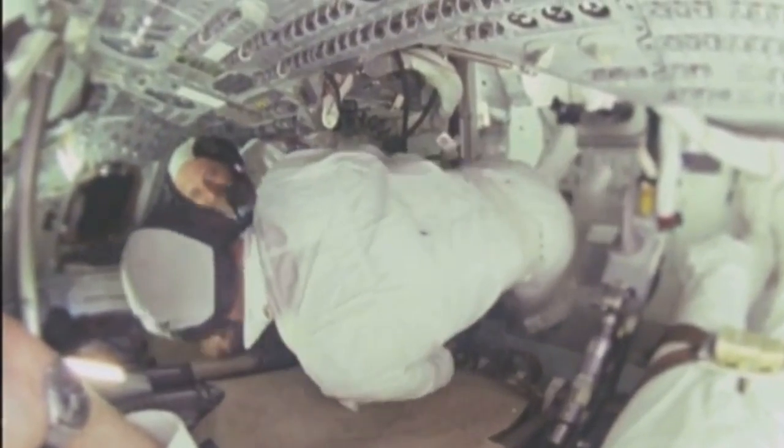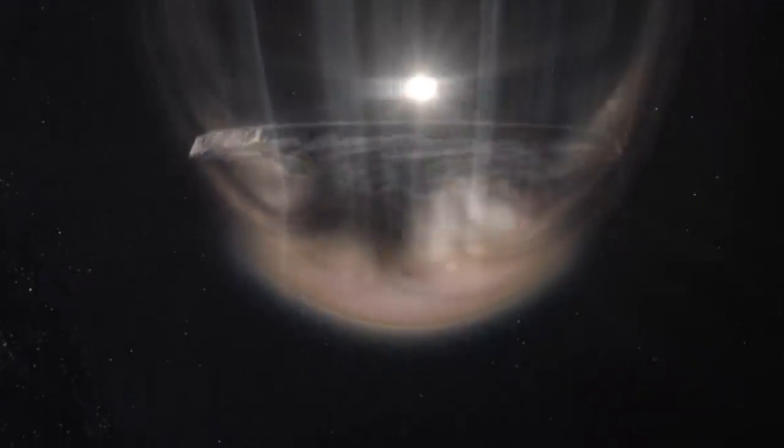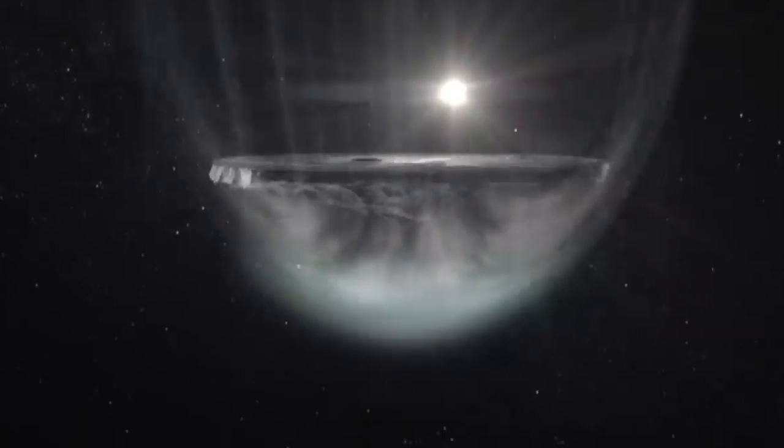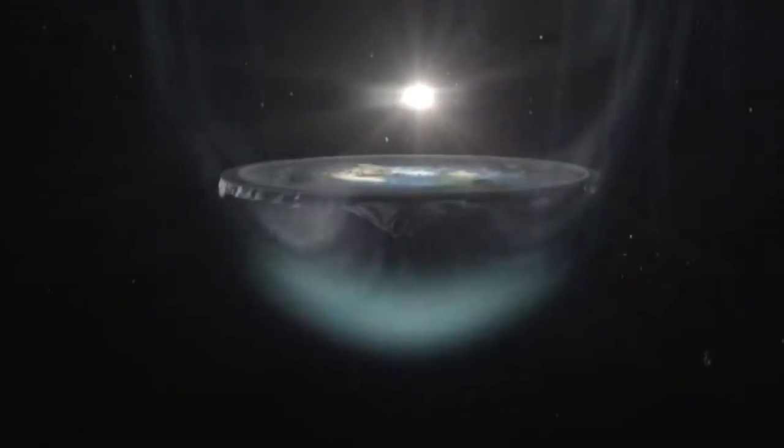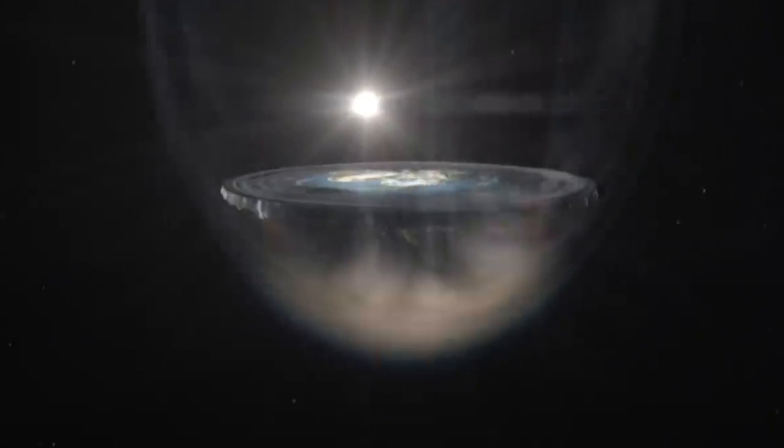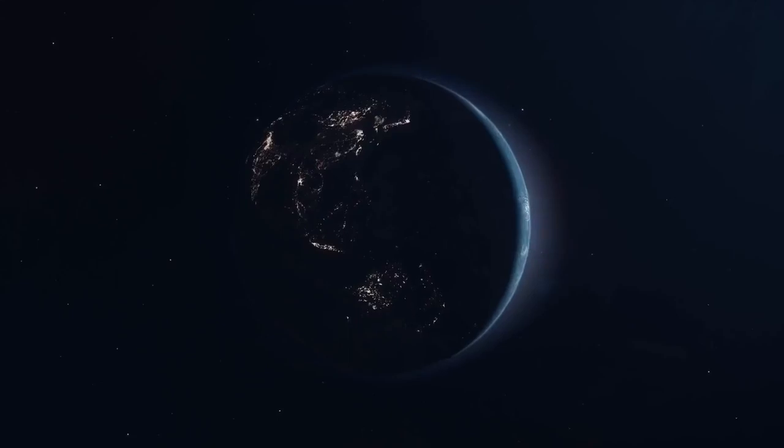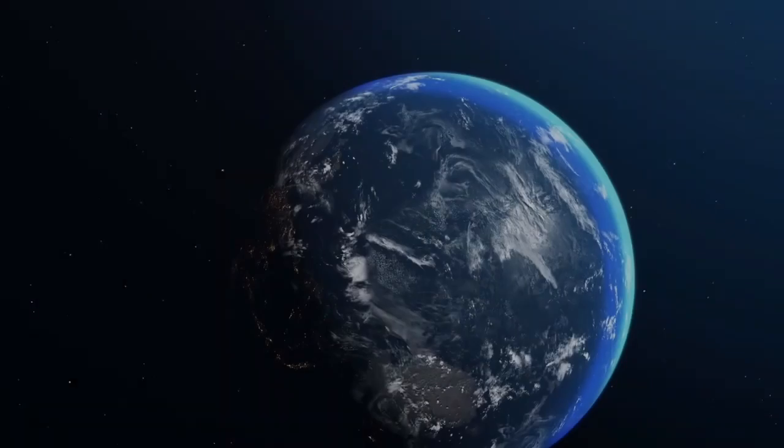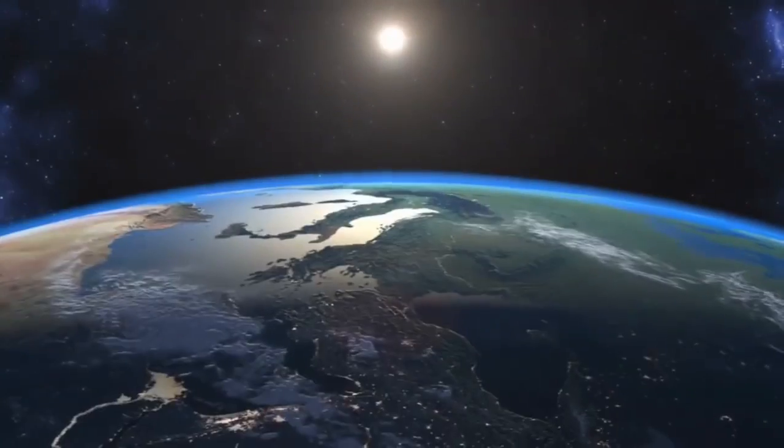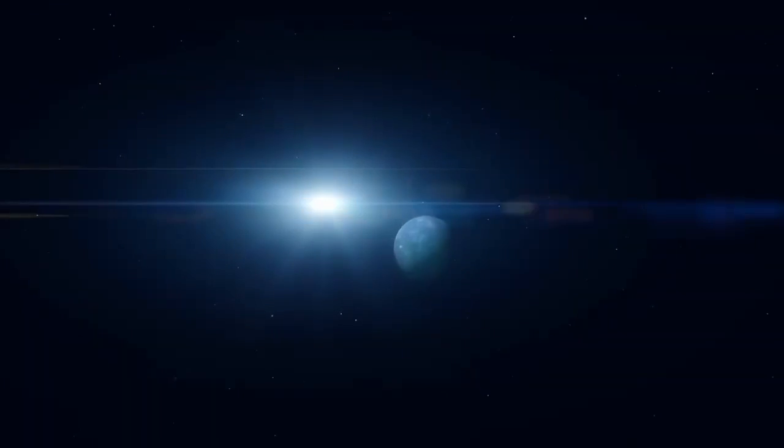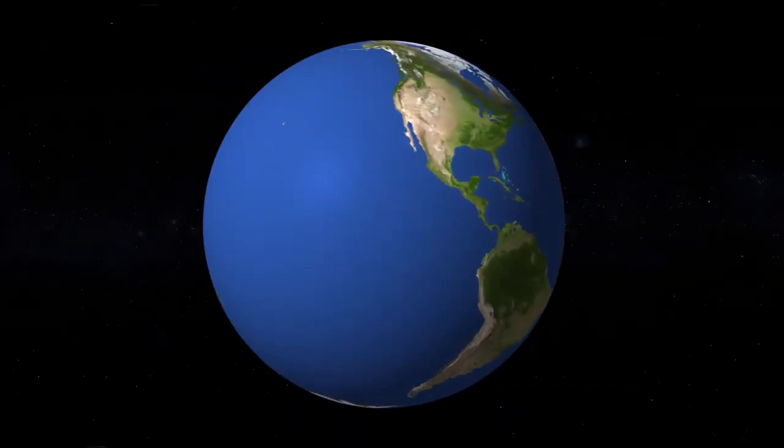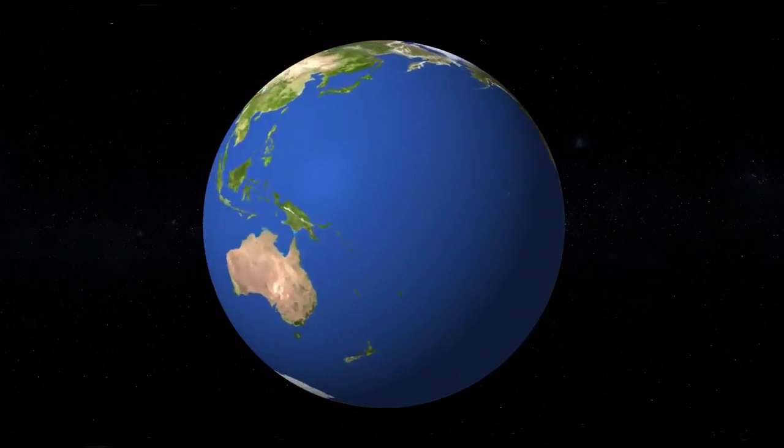Astronauts in orbit are constantly falling towards the earth and missing it. If the earth was not falling towards the sun, it would fly wildly out of orbit under its own inertia. The falling trajectory of the earth around the sun, combined with earth's tilt, is what causes the different seasons.